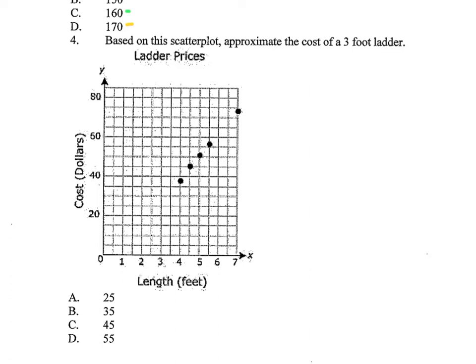Number four, based on the scatterplot, approximate the cost of a three-foot ladder. So three feet is here. We're going to see which one would make the most sense that would fall in this line. They didn't really give us a line, but we can kind of predict and see where that line would go.